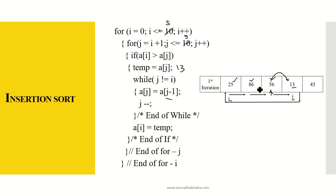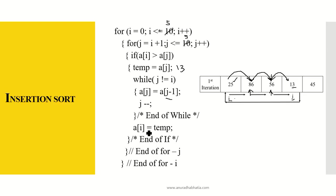While j is still not equal to i, a[j] equals a[j minus one], so 86 moves to the next location. j minus minus again. Now a[j] equals a[j minus one], so 25 moves to that location. j minus minus — now j equals i, so we exit the while loop. Finally, a[i] equals temp, and temp holds the value 13, so that position gets the value 13. This is how insertion sort is actually implemented.